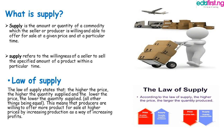Supply is the amount or quantity of a commodity which the seller or producer is willing and able to offer for sale at a given price and at a particular time. Supply refers to the willingness of the seller to sell a specific amount of products within a particular time.